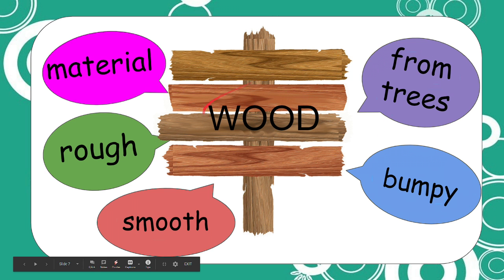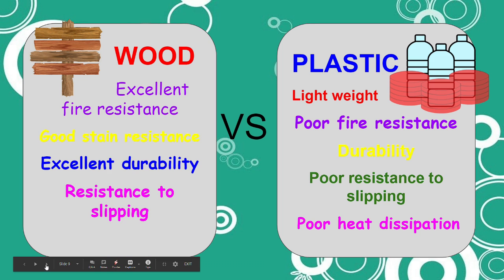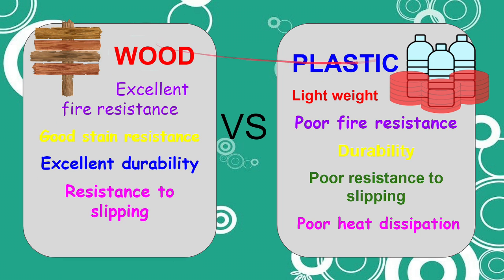We already learned about plastic properties, and now we are going to compare wood and plastic. For wood, it is excellent in fire resistance. Plastic has poor fire resistance.